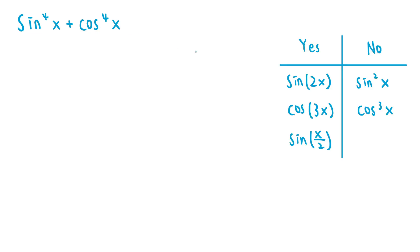So we can have terms like sine of 2x, cosine of 3x, or even sine of x over 2, because we're not restricting multiples to integers. But we're not allowed to use something like sine squared of x or cosine cubed of x, since they contain exponents other than 1. We're also allowed to have constant terms, and we'd like to rewrite everything in terms of sine and cosine functions only.